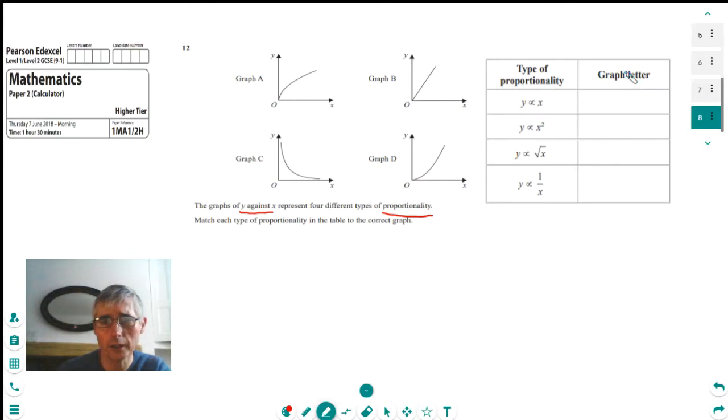The first one. We're saying y is directly proportional to x. That really says that as y increases, so does x and they both increase at an equal rate. So we could say that is graph B.